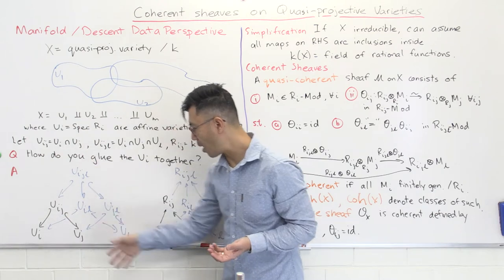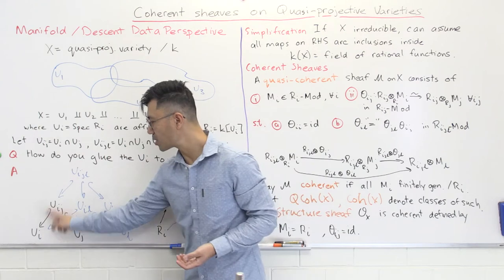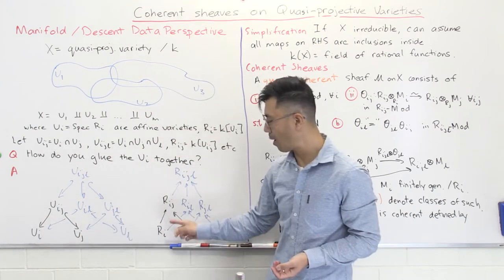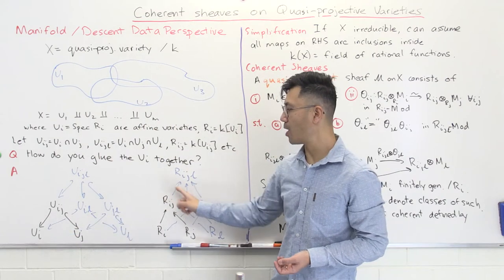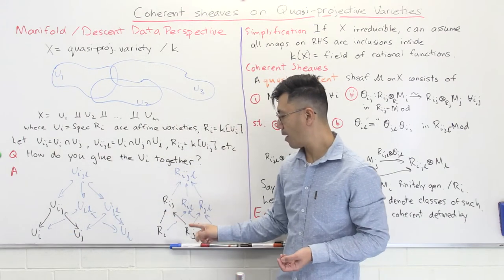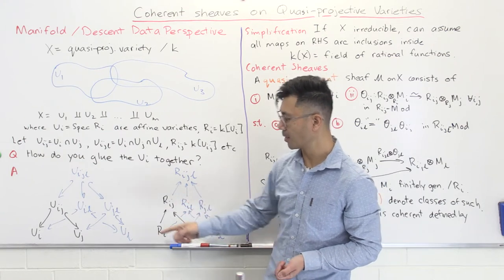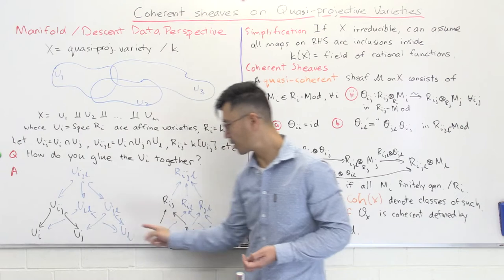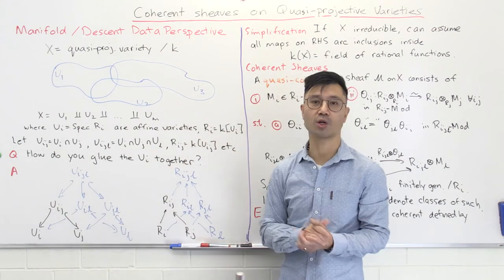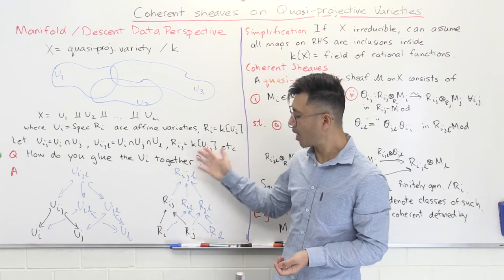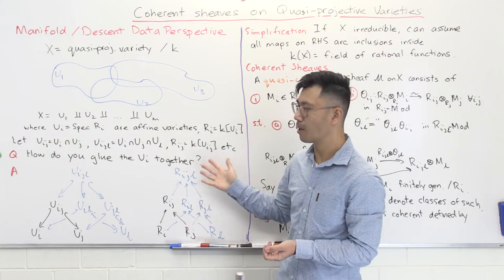To understand the geometry, you can just look at the commutative rings — the coordinate rings of everything — and reverse all the arrows. For this little triangle, you'll have a map from Rᵢ, the coordinate ring of Uᵢ, to Rᵢⱼ, and also a map from Rⱼ to Rᵢⱼ. The diagram on the right hand side is quite nice. There's a simplification that works fairly generally, but the easiest way to state it is when X is irreducible.